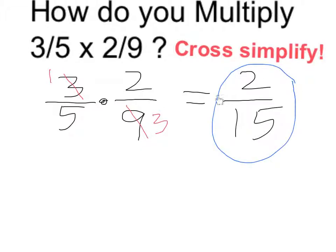This answer does make sense in terms of our estimate. 2/15 is a little bigger than 1/9, because 1/9 would be equal to 2/18. Fifteenth-size pieces are a little bigger than eighteenth-size pieces, and 2/15 is a very reasonable answer.